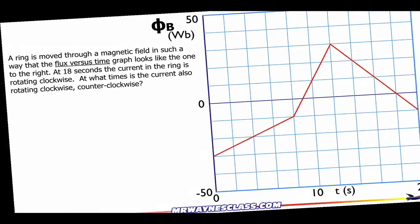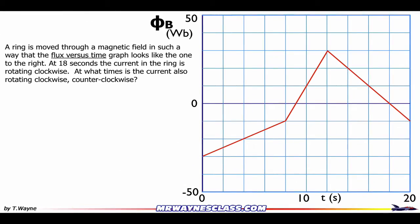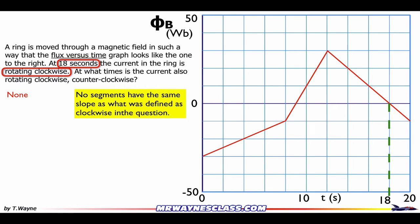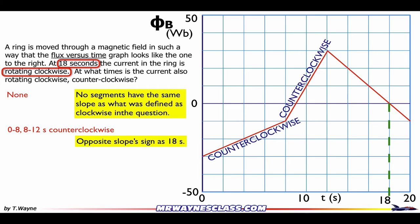Problem 2: A ring is moved through a magnetic field such that the flux versus time graph looks like the one to the right. At 18 seconds, the current is rotating clockwise. At what times is the current also rotating clockwise and counterclockwise? The clue again is in the problem — at 18 seconds it's clockwise, and that corresponds to a negative slope. There are no other negative slopes in this problem, so there's no other clockwise section. Clockwise occurs from zero to eight seconds, and counterclockwise occurs from eight to 12 seconds, since those have the opposite slope from what was defined at 18 seconds.